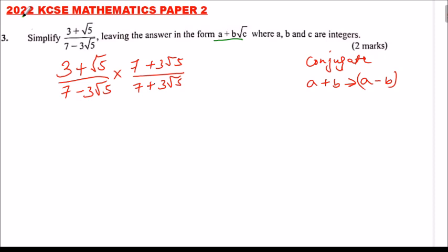Let's multiply this. 3 multiplied by 7 gives you 21. 3 multiplied by 3√5, you multiply the whole numbers: 3 times 3 is 9, so 9√5. Then √5 multiplied by 7 gives you 7√5.